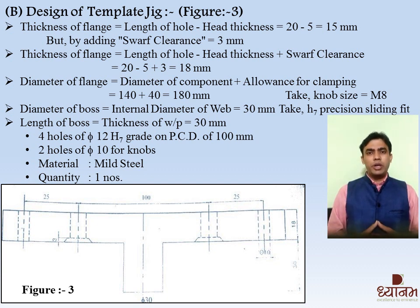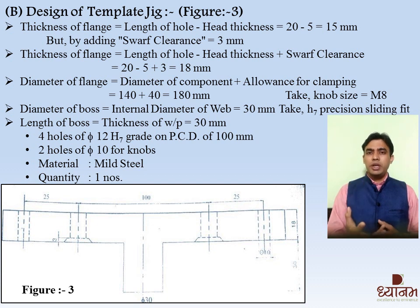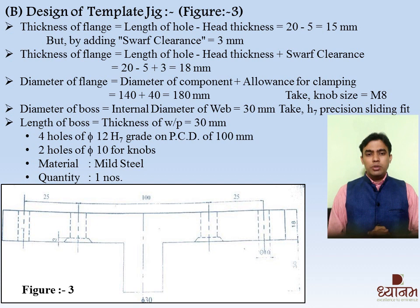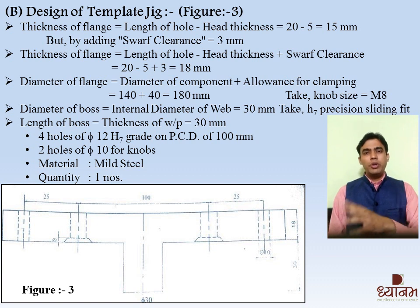Some additional data: 4 holes of 12 mm diameter are to be drilled on PCD of 100 mm, and 2 holes of 10 mm diameter are required to be drilled for clamping purpose — for clamping of the knob, we need to drill 2 holes. The material of plate is mild steel. Now we will move towards the design of clamping device and learn the design of clamps.